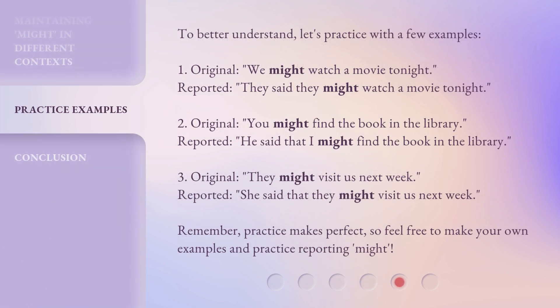To better understand, let's practice with a few examples. Original: 'We might watch a movie tonight.' Reported: 'They said they might watch a movie tonight.' Original: 'You might find the book in the library.' Reported: 'He said that I might find the book in the library.'